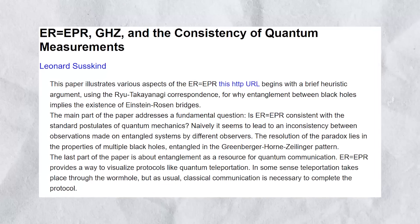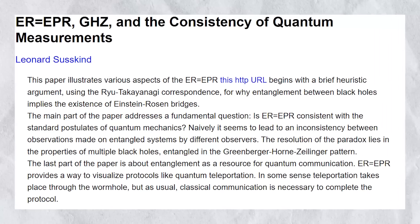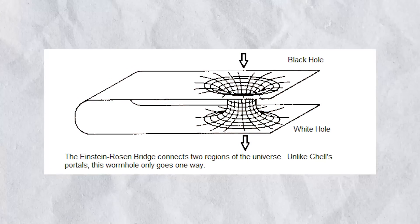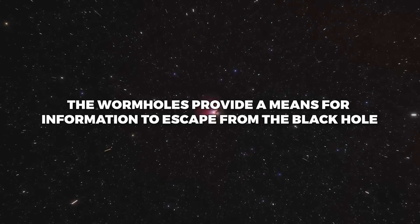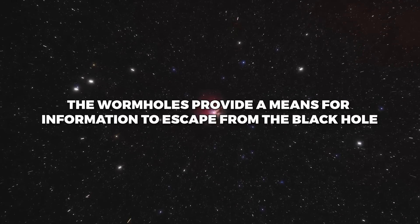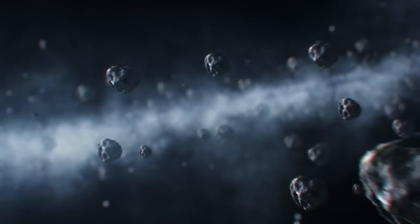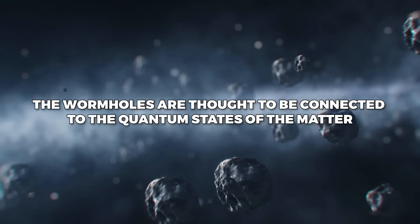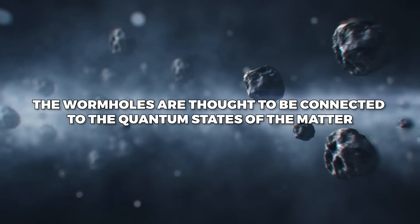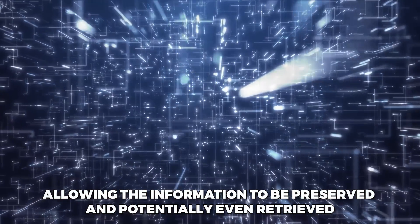A third theory is known as the ER equals EPR conjecture, which proposes that black holes are connected by wormholes, or Einstein-Rosen bridges, to other regions of space-time. According to this theory, the wormholes provide a means for information to escape from the black hole, even though matter falling into the black hole cannot escape. The wormholes are thought to be connected to the quantum states of the matter that fell into the black hole, allowing the information to be preserved and potentially even retrieved.